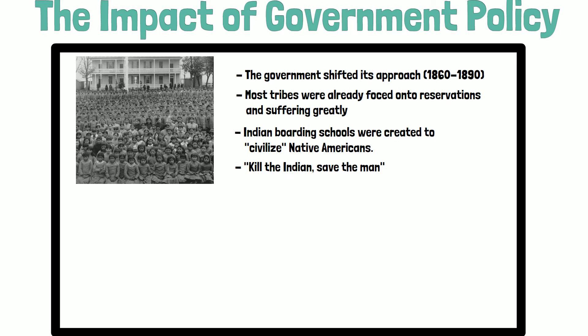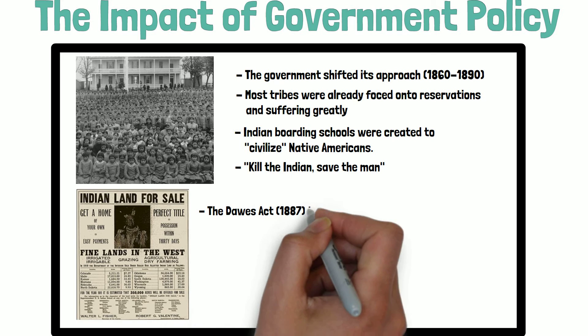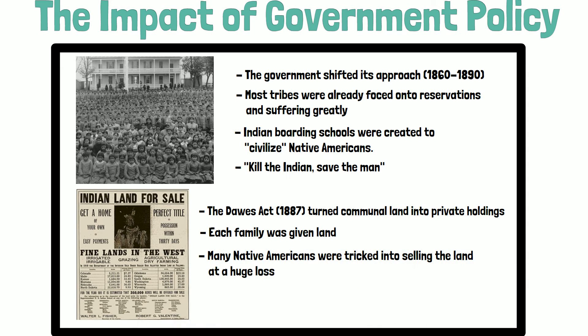These schools aimed to transform the culture of Native American children by teaching them English, American customs, and Christianity. Similarly, the Dawes Act of 1887 divided communal tribal land on reservations into private holdings. Each family was assigned a piece of land and given rights to it. But since most Native Americans were unfamiliar with contracts, the English language, and the concept of private property in general, many were tricked into selling their land to American businessmen at a huge loss of profit.